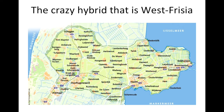Now we switch to West Frisia. I live over here in Enkhuizen. This is the IJsselmeer, the former Southern Sea; this is the North Sea. West Friesland is a regional entity sort of built around the Westfrisian Omringdijk. One of my favorite things to do in summer is to take my bike and ride the Westfrisian Omringdijk — it's about 130 kilometers long. This regional entity is a crazy hybrid of everything that we've seen.